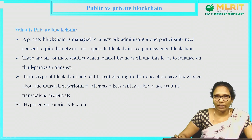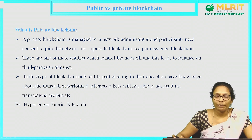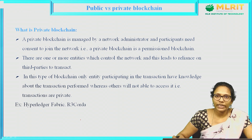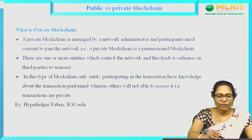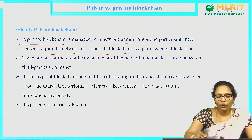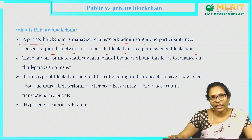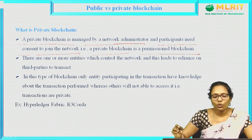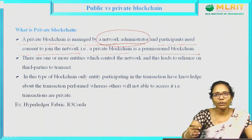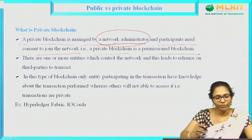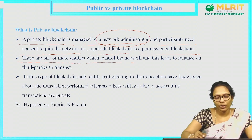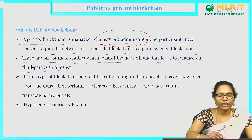Coming to private blockchain — the name itself is telling it is private. That means it is centralized. I cannot say fully centralized, but it comes under centralized. There is a central authority to monitor this private blockchain. A private blockchain is managed by a network administrator, and participants need to consent to join the network. That is, private blockchain is a permissioned blockchain. If I want to participate in the private blockchain, I first need to take the consent, the permission. There are one or more entities which control the network, and this leads to reliance on third parties to transact.